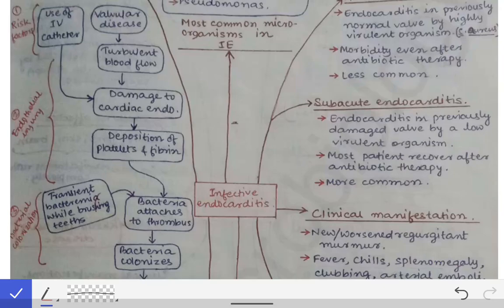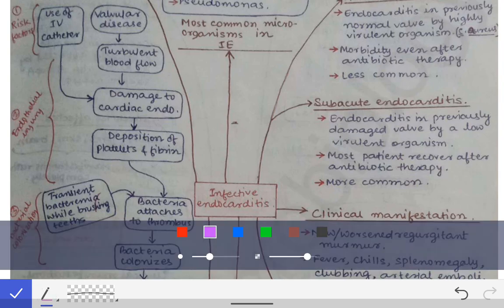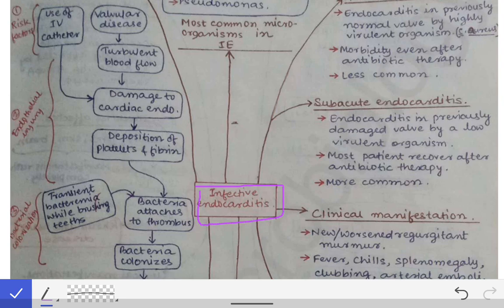We will see about infective endocarditis. Infective endocarditis means the inflammation or infection of the endocardium of the heart. The heart has three layers: pericardium, myocardium, and endocardium. The endocardium is the innermost layer of the heart. When that is infected, it is called infective endocarditis. It involves not just the endocardium but also the valves of the heart.